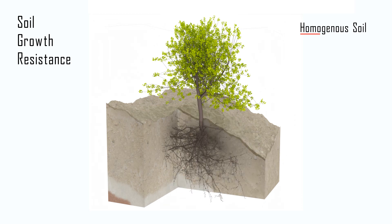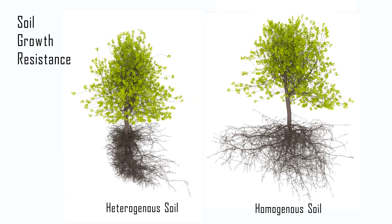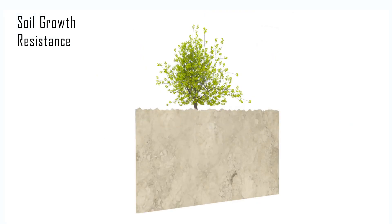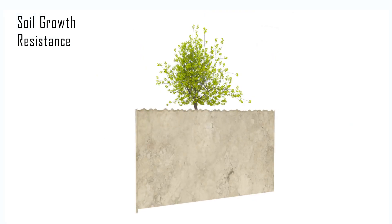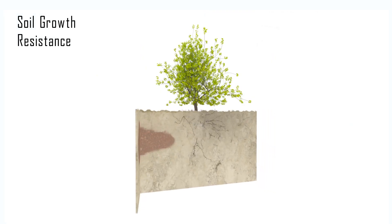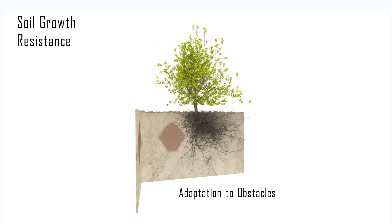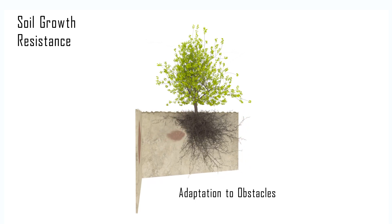In soils of low growth resistance, an overly shaped and less dense root form emerges. In this example, the root branches of a tree grew around the region with high growth resistance.